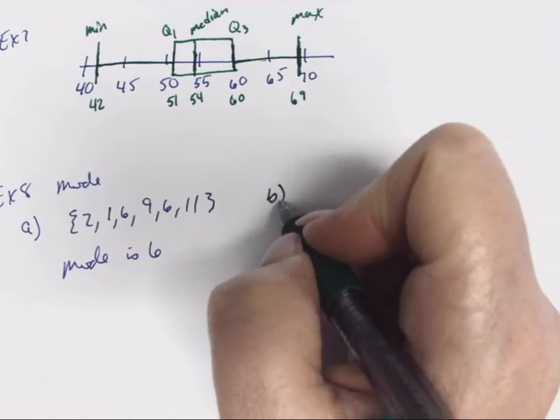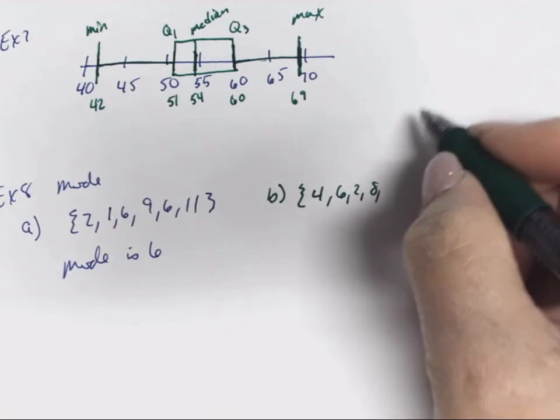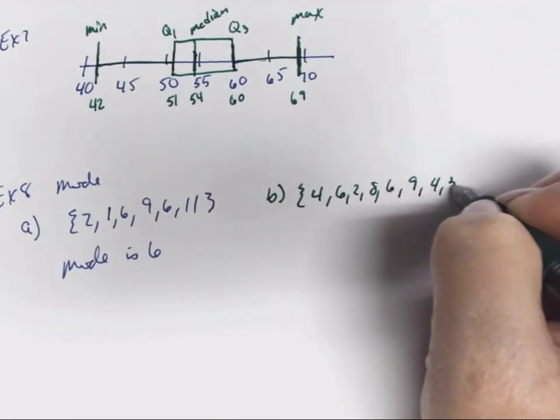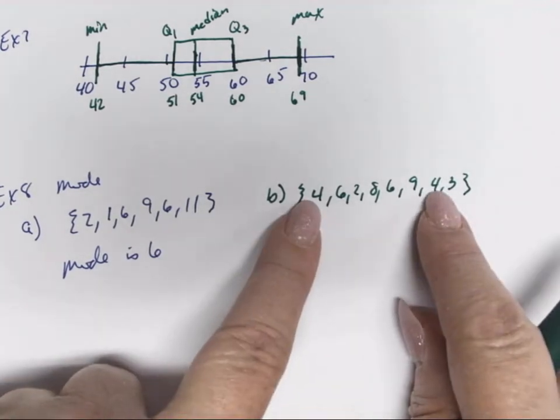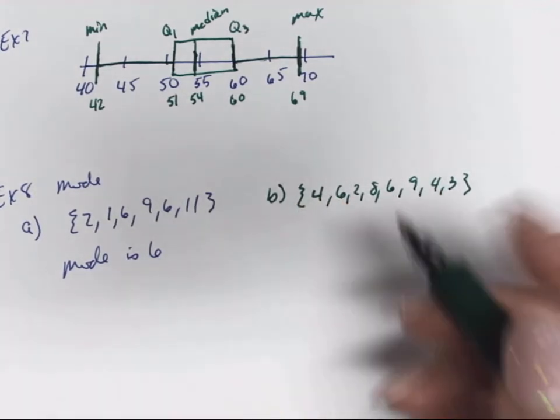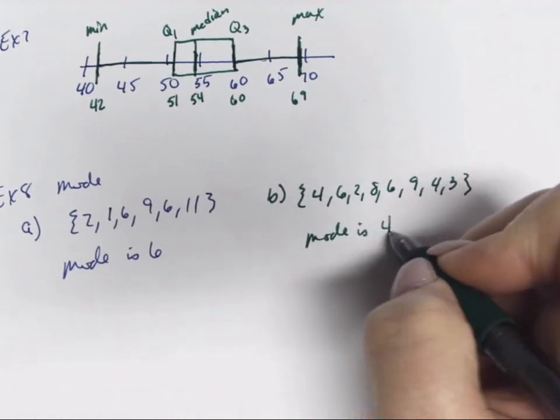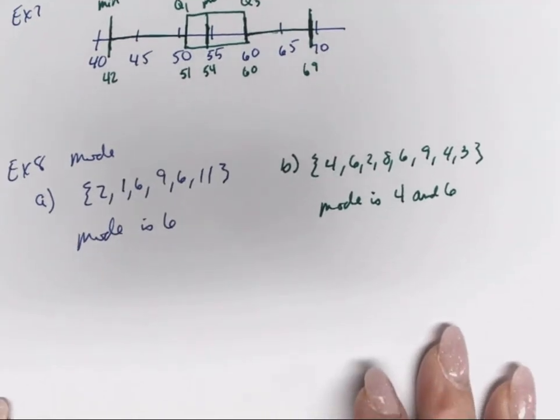If we look at a second one, and we have 4, 6, 2, 8, 6, 9, 4, and 3, we have 4 occurs twice and so does 6. So our mode is going to be 4 and 6. So you can have more than one mode.